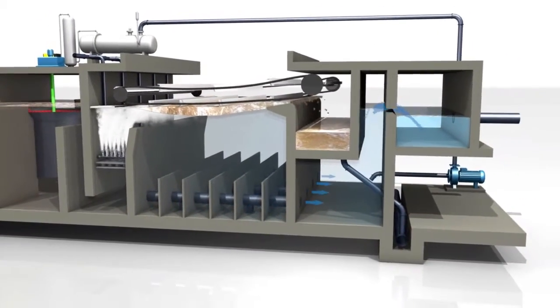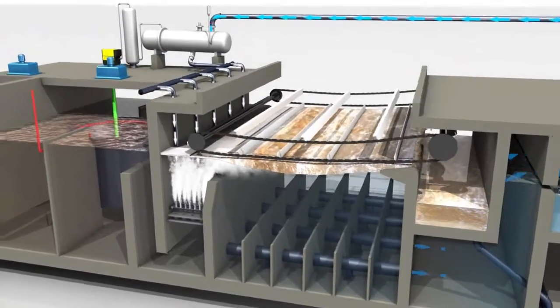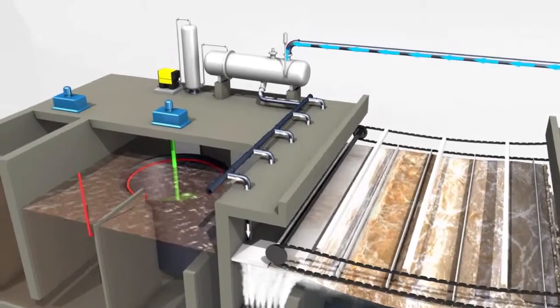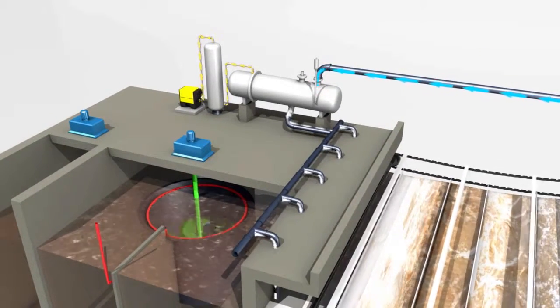The clarified water leaves the process through the clarified water channel. A portion of this clarified water is pumped to the white water pressurization vessel, and the compressed air injection device completes the dissolved air and pressurized water production system.